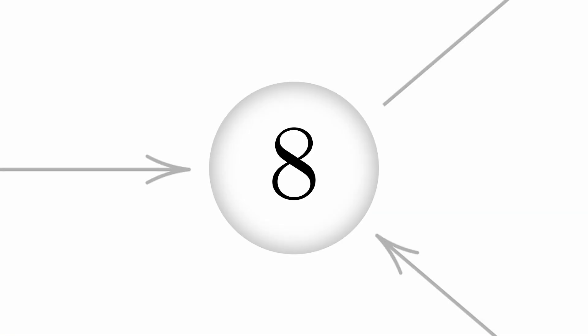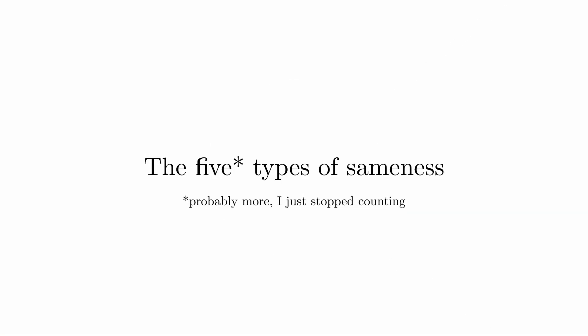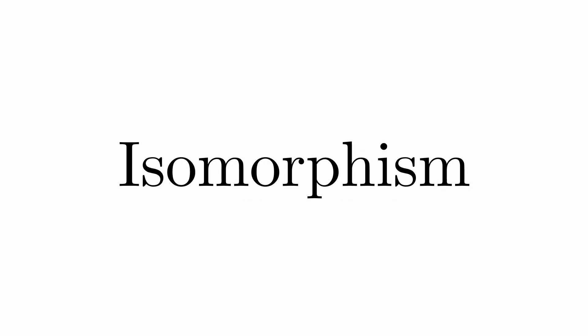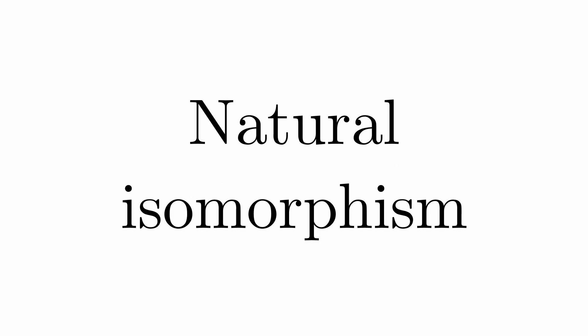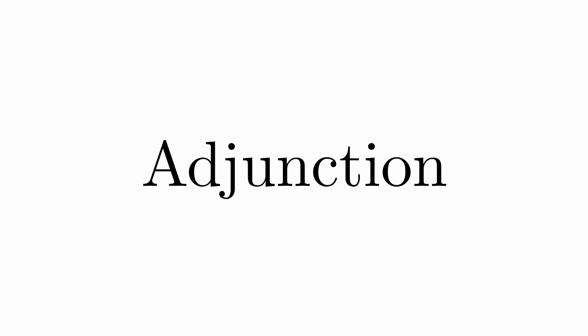Fact 8: There are 5 ways to say things are the same in category theory: the same, basically the same, basically basically the same, basically the same but spicy, and… I don't even know how to explain this one.